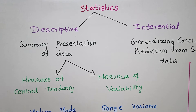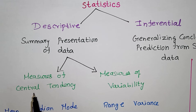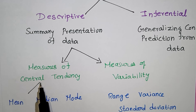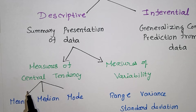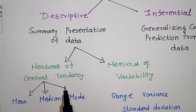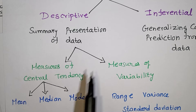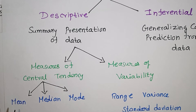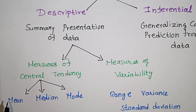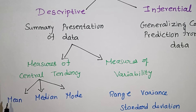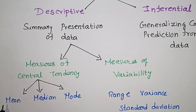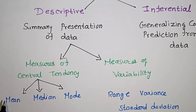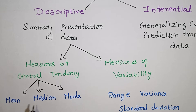Measures of central tendency include the mean, median, and mode. The mean is the average — you add all the values and divide by the number of terms.